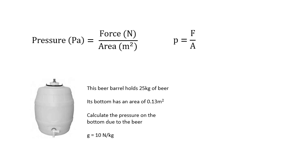There are a couple of equations you need to know. The first one: pressure equals force over area. You could measure pressure in newtons per metre squared, but we measure it in pascals — one pascal is the same as one newton per metre squared. So pressure in pascals equals force in newtons divided by area in metres squared.